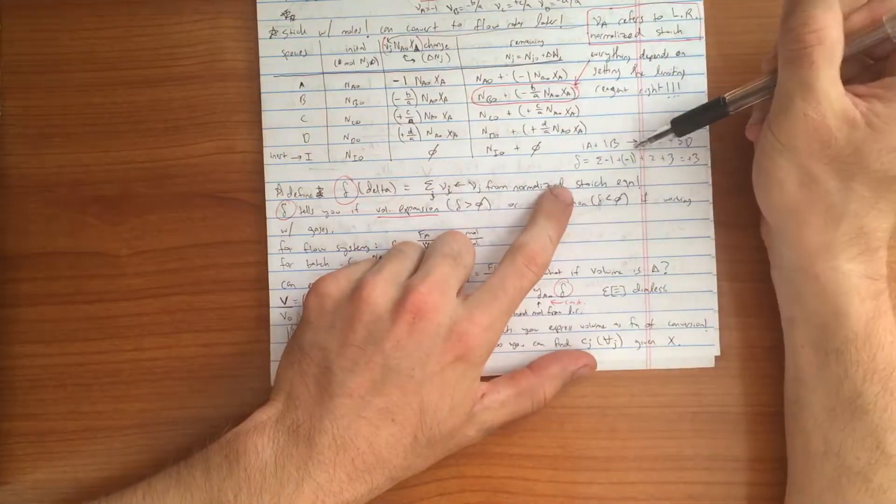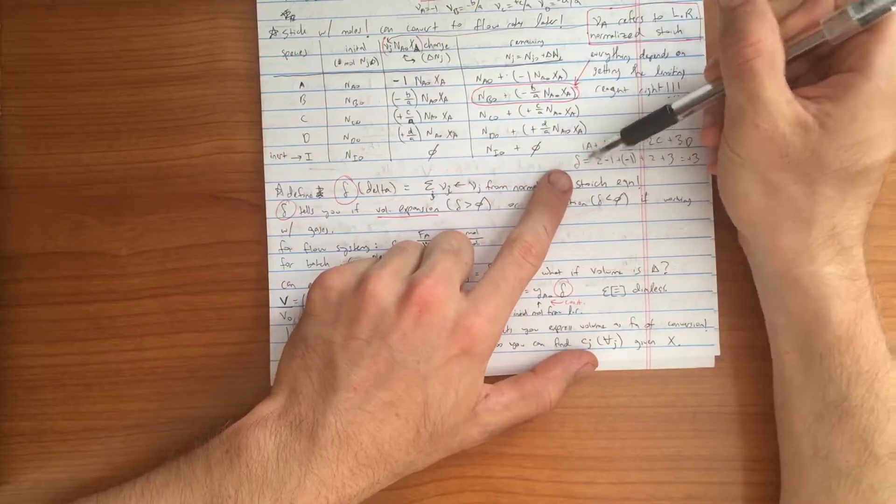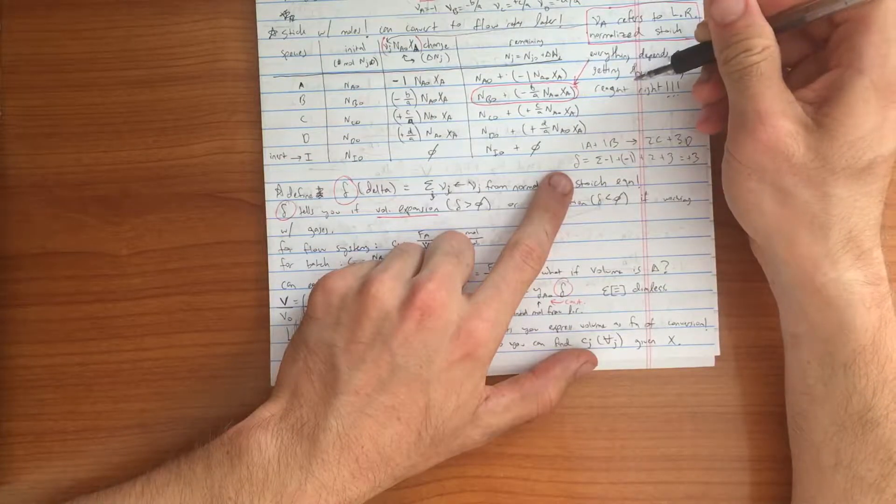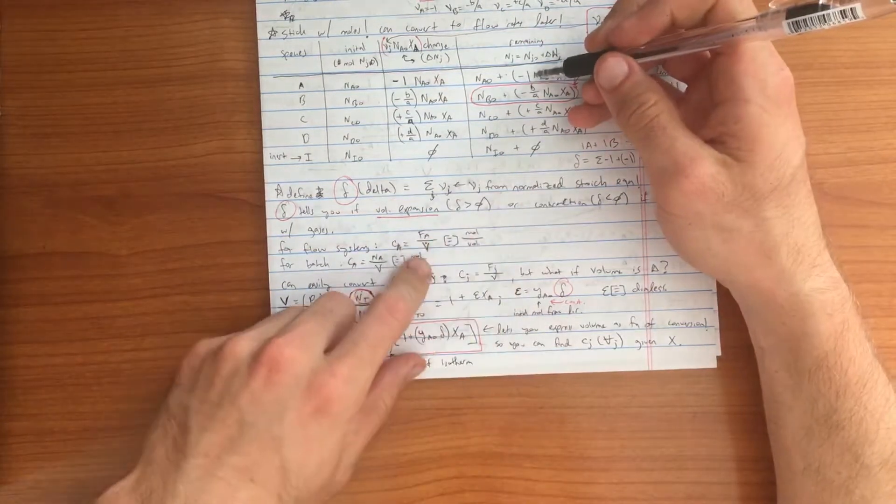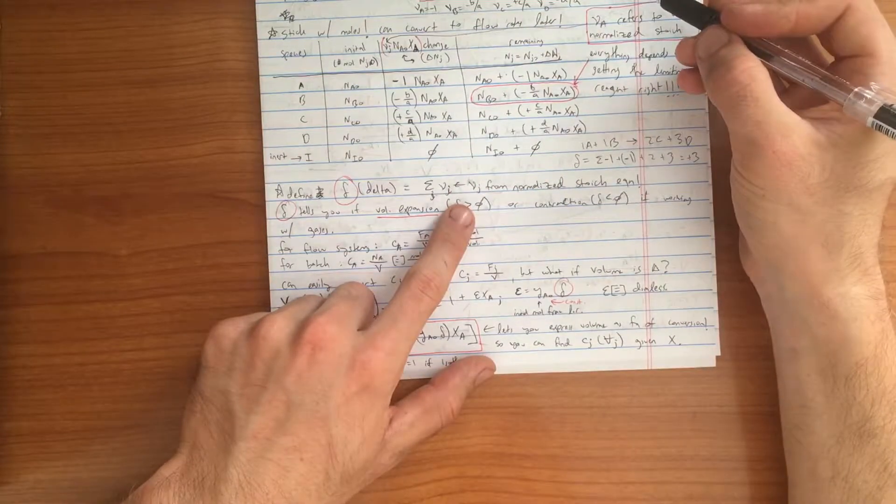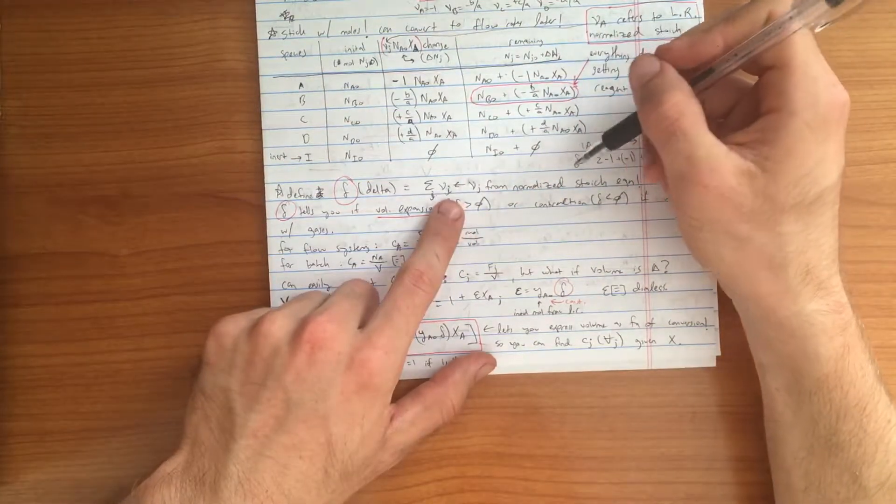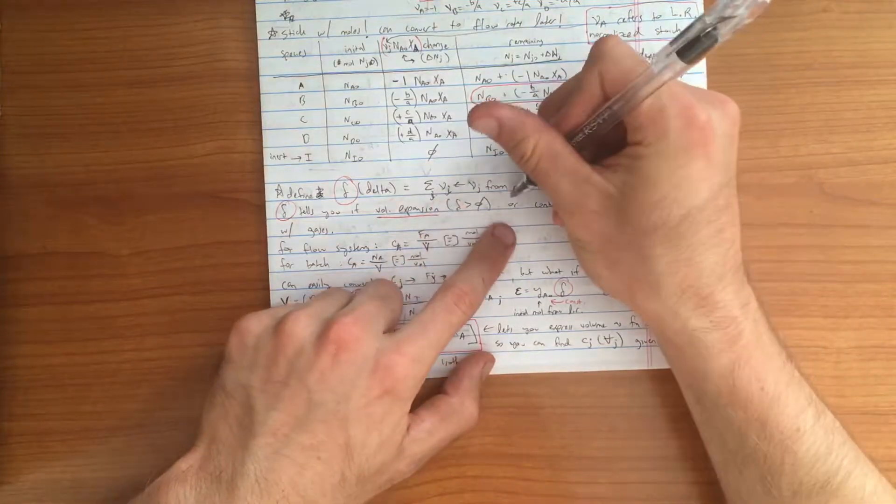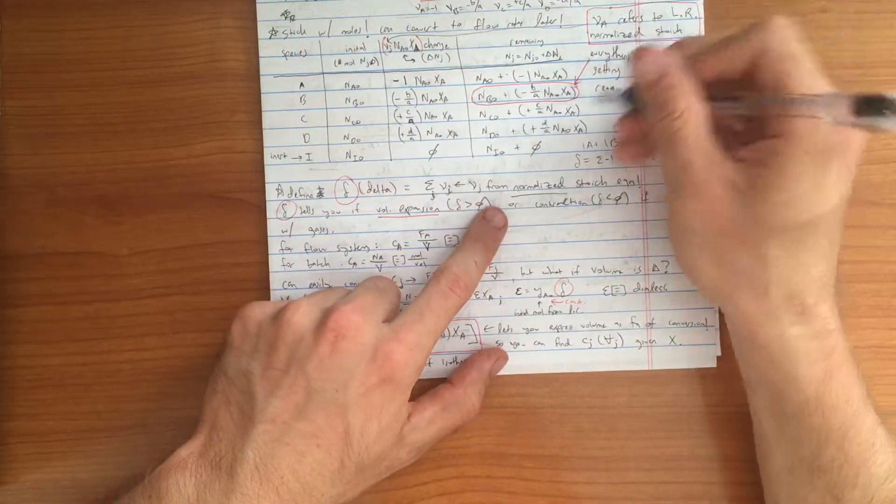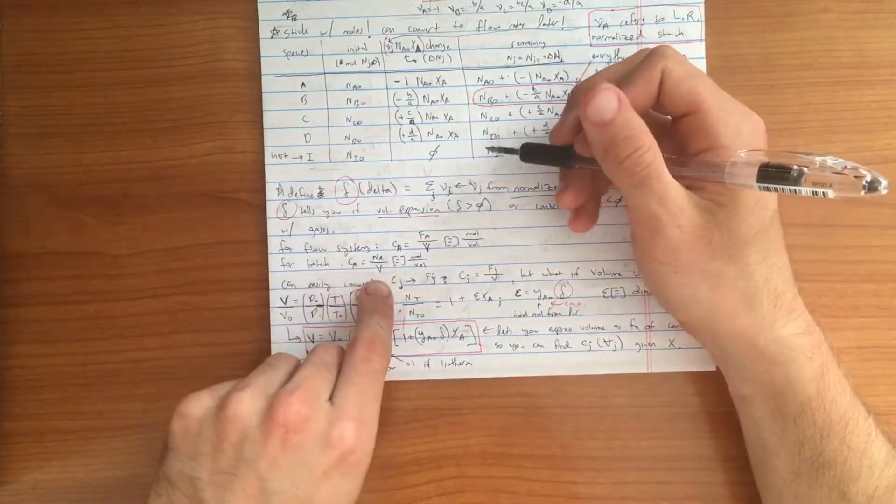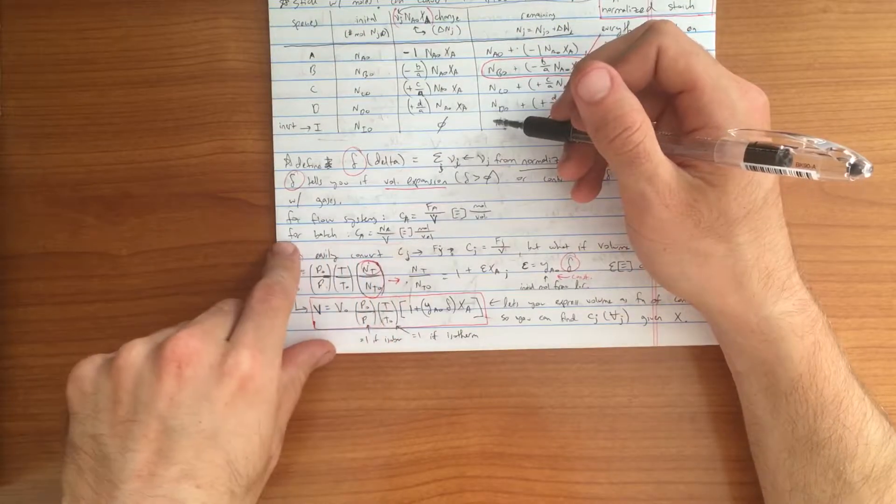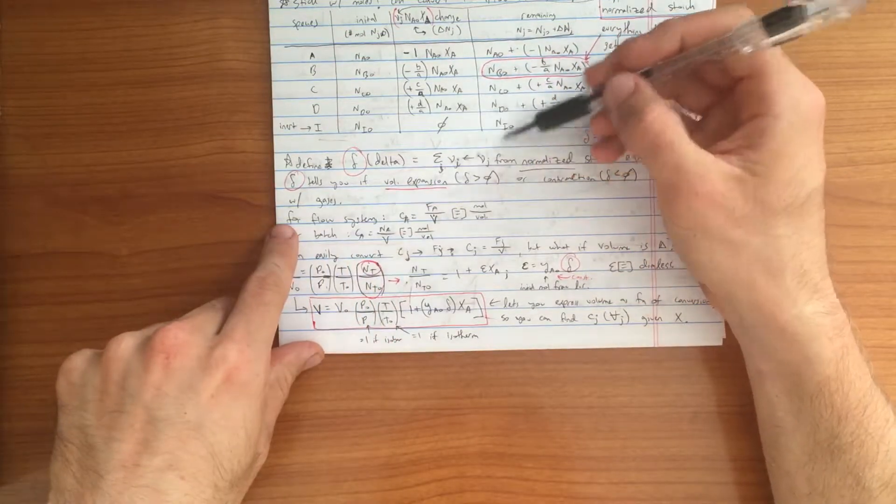Given this data, now that you know what your delta value is, to keep it generic, I am leaving it in this form so you can apply this to whatever reaction you have, the stoichiometry you have. Make sure this is coming from the normalized stoichiometric equation, otherwise you'll run into problems.